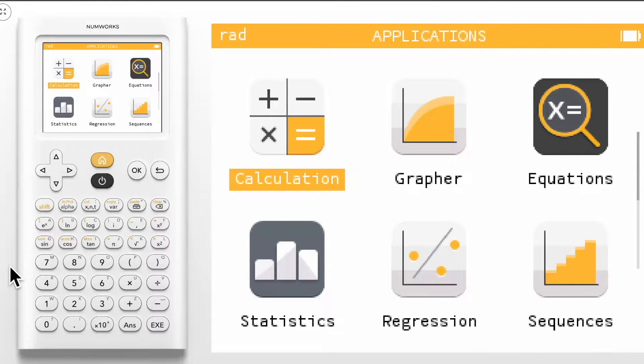Today we are going to learn how to change the unit of measurement for angles on the NumWorks graphing calculator. By default, the NumWorks graphing calculator is in radian mode as indicated in the top left corner of the calculator screen.